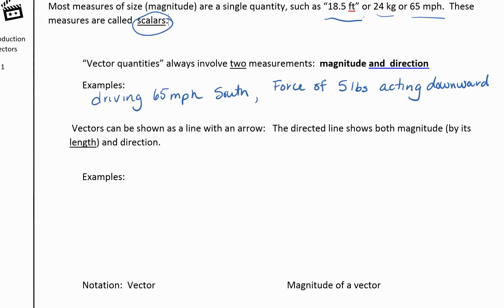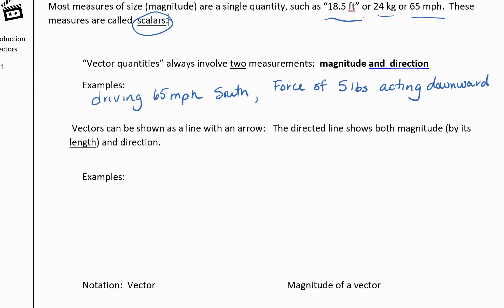So our vectors, and vectors we could actually have more than two measurements. So these are two dimensional vectors. You could have say three dimensional vectors or four dimensional vectors. So vectors can be shown as a line with an arrow. So how long it is is going to be its magnitude and then what direction it is is its direction.